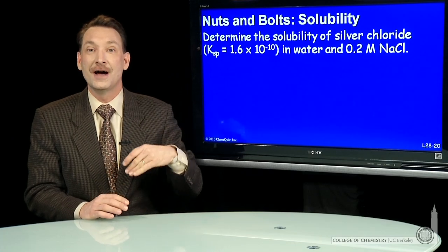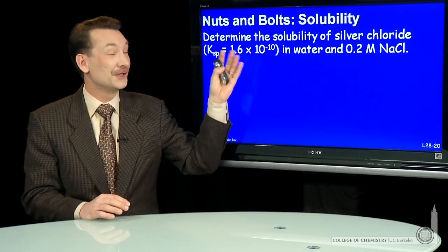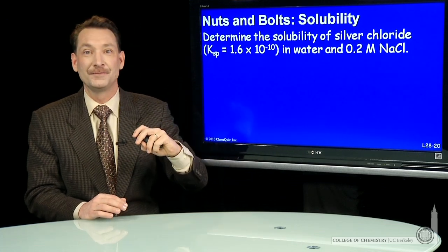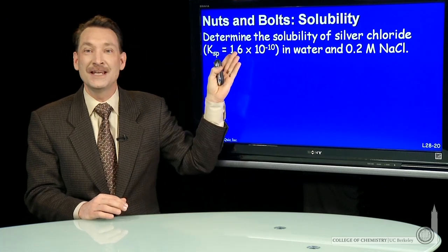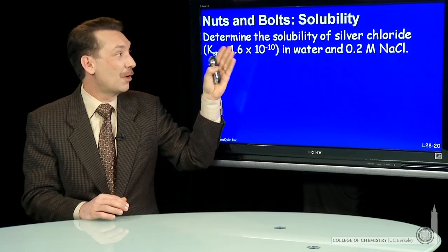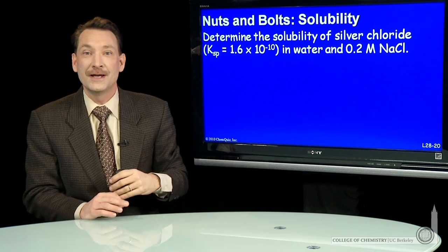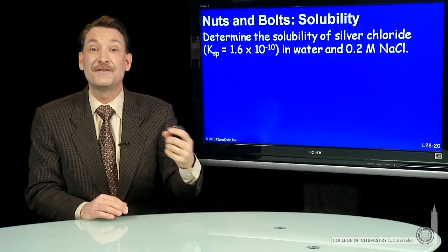Let's do a calculation involving a sparingly soluble salt, silver chloride, and a very soluble salt, sodium chloride. The Ksp, the solubility product for silver chloride, is 1.6 times 10 to the minus 10. For sodium chloride, we don't report a Ksp because it's very soluble.